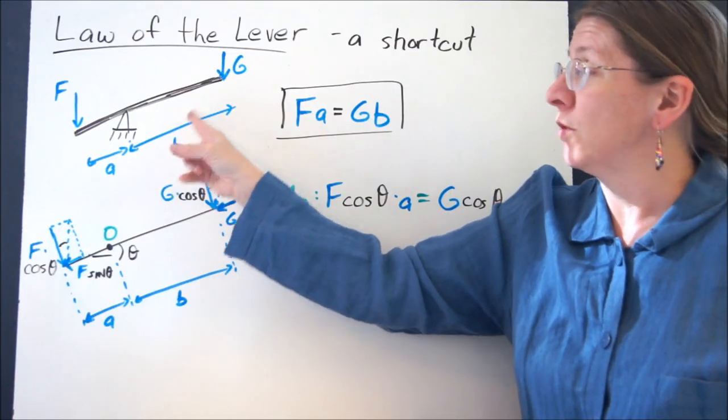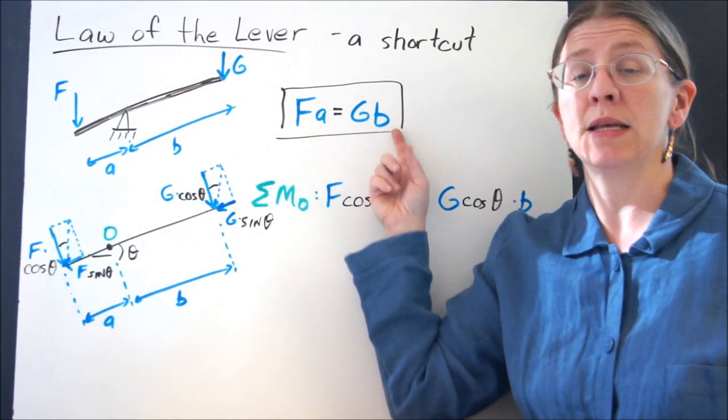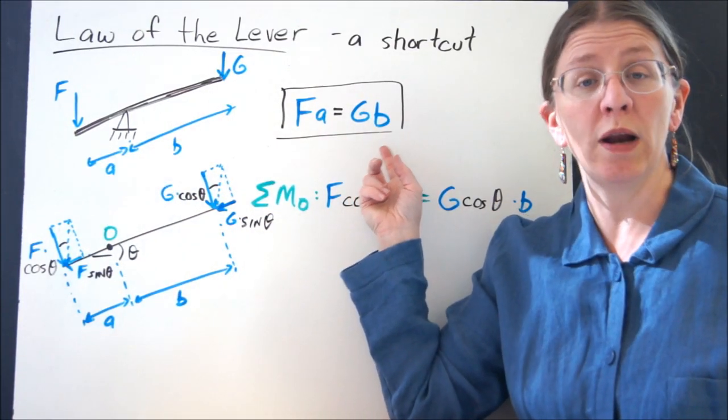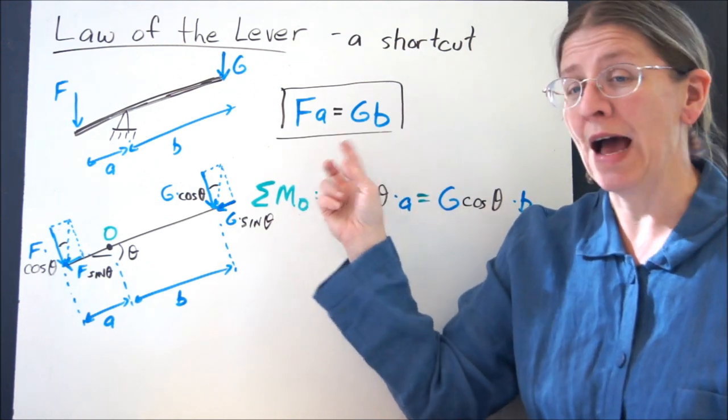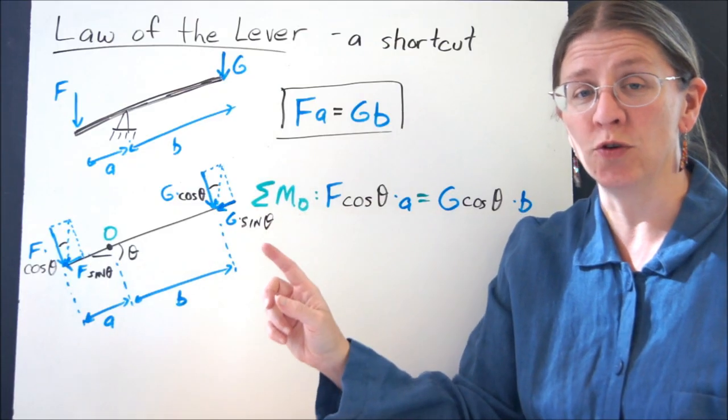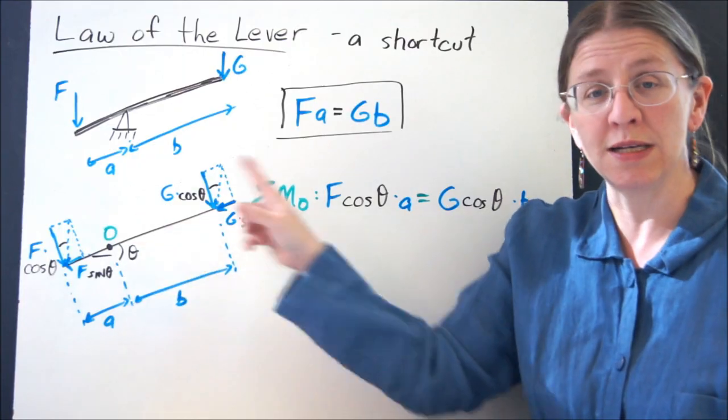In general, when we're talking about the Law of the Lever, what we mean is that Fa is equal to Gb. So whatever two forces you have, if they're acting along a single line, you don't actually have to take the sum of the moments at the fulcrum with the whole cosines and sines thing.